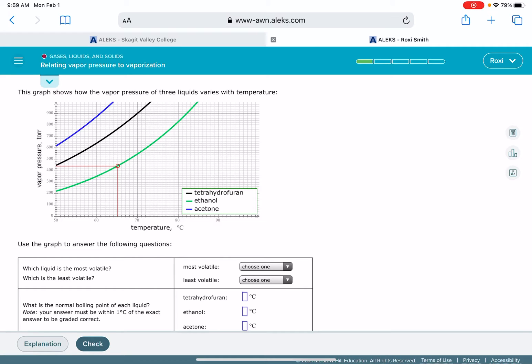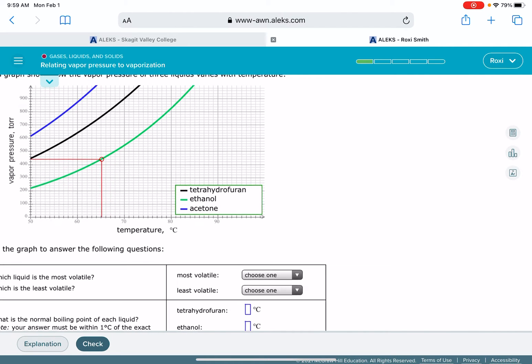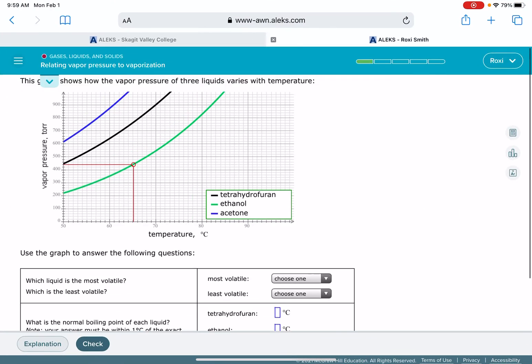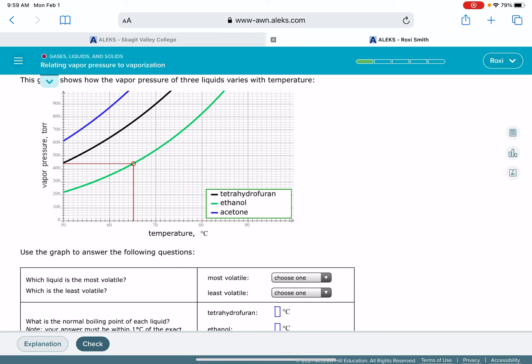In this video, we're going to go through the Alex problem called relating vapor pressure to vaporization. In this problem, you're given a graph with data for three different liquids. The graph gives you the vapor pressure in units of torr versus the temperature in units of degrees C. Vapor pressure is the amount of the gas that is evaporating, naturally evaporating over the surface of the liquid.